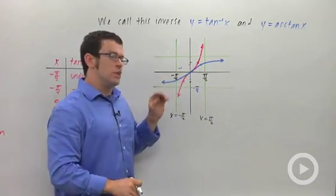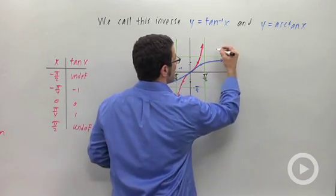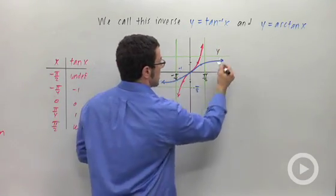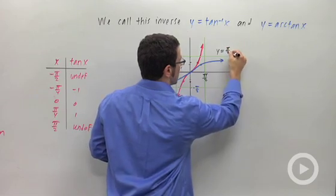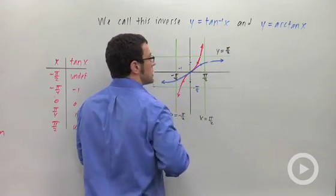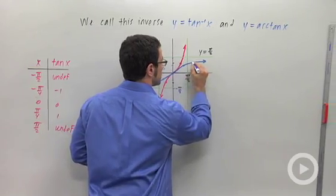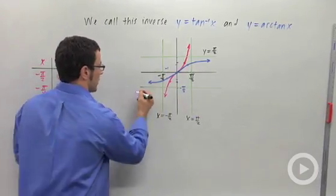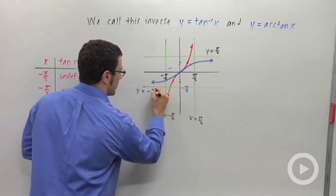So this is sort of an interesting function because it's probably the first function we've looked at where there were actually two horizontal asymptotes. y equals pi over 2, inverse tangent approaches that as x approaches infinity. And as x approaches negative infinity, the graph goes to y equals negative pi over 2.